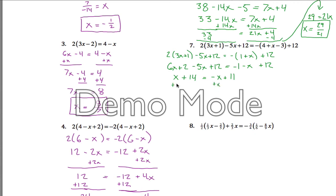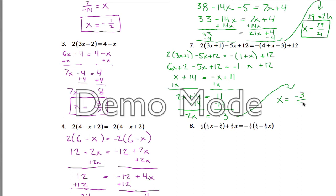Now if you add x to both sides, what you get is 2x plus 14 over here and 11 over here. So if you subtract 14 from both sides, we've got 2x left on the left and negative 3 on the right. And so if you divide both sides by 2, you get x equals negative 3 halves for your final answer.